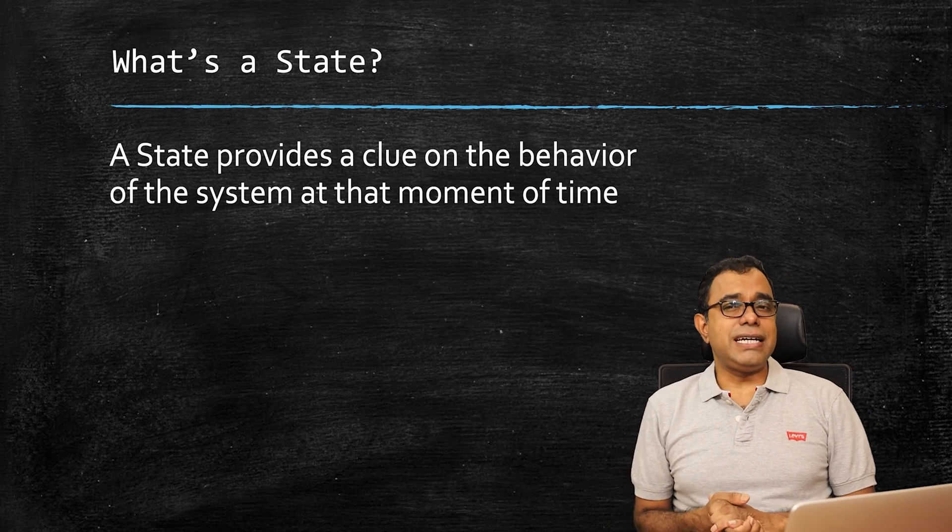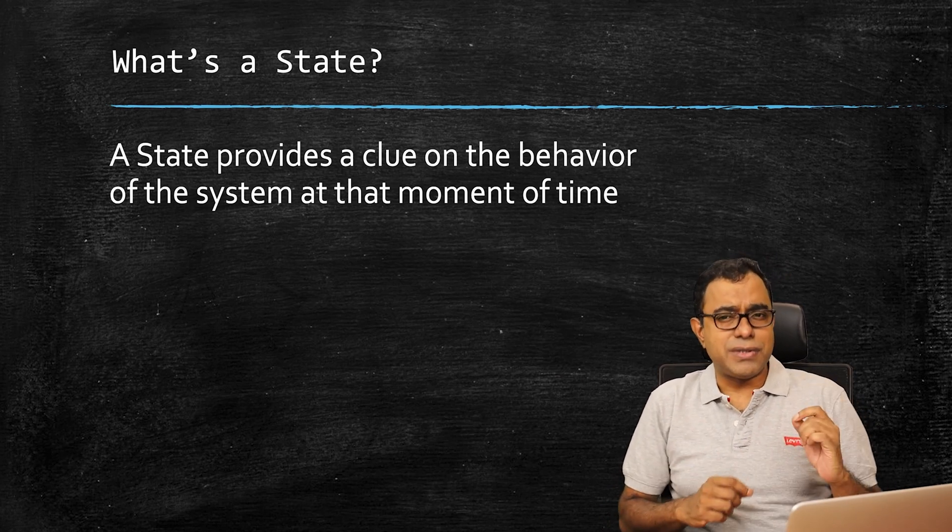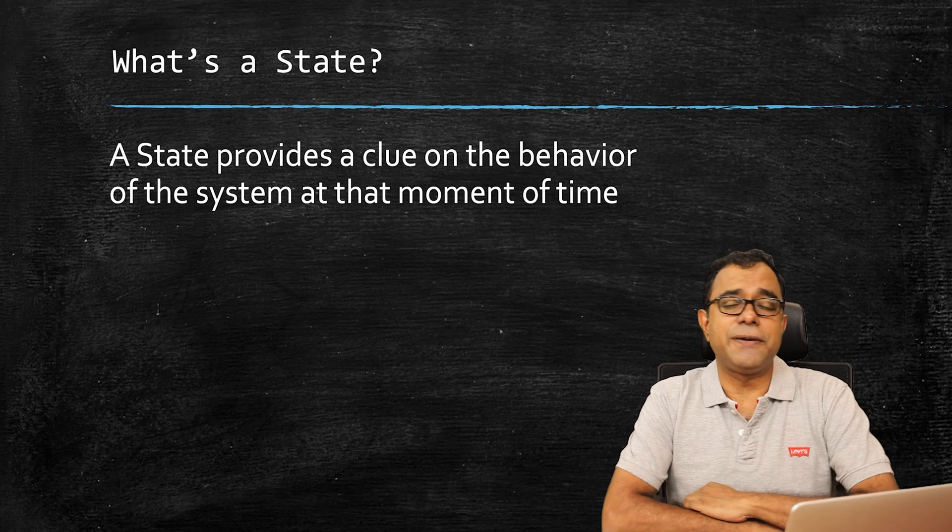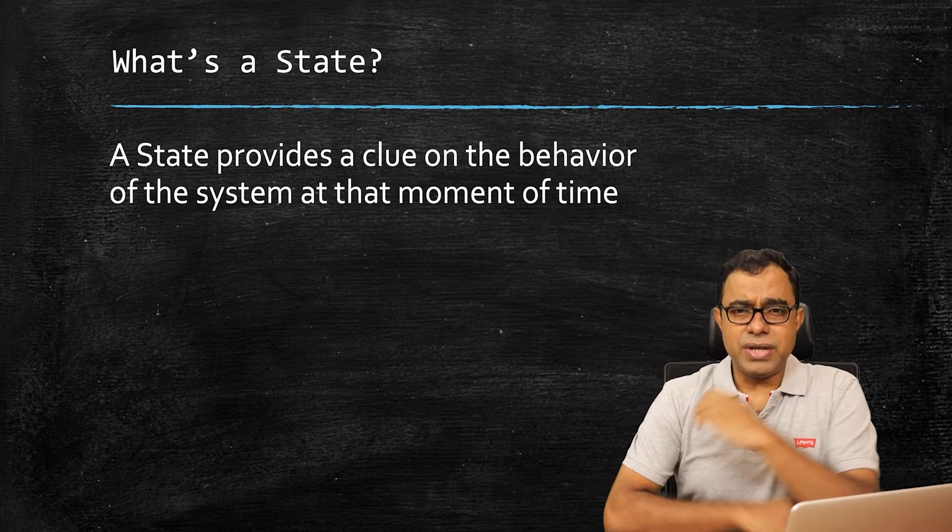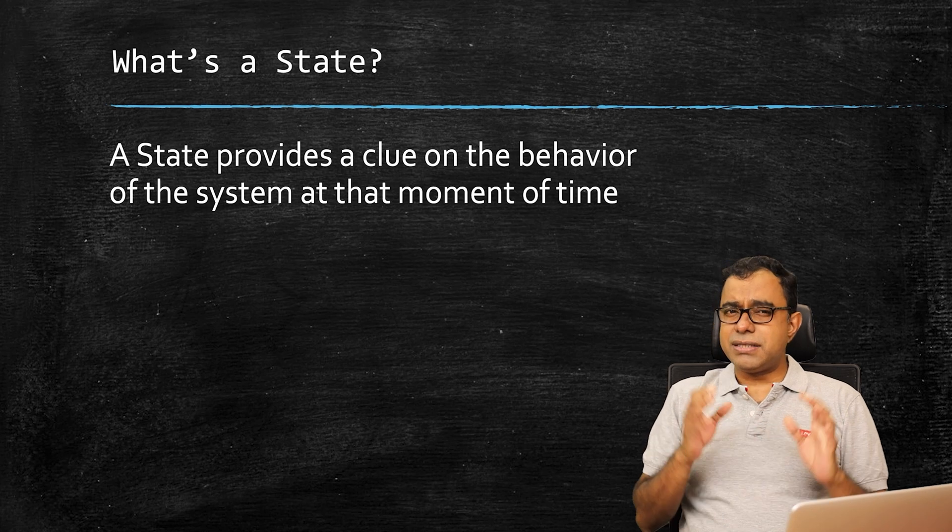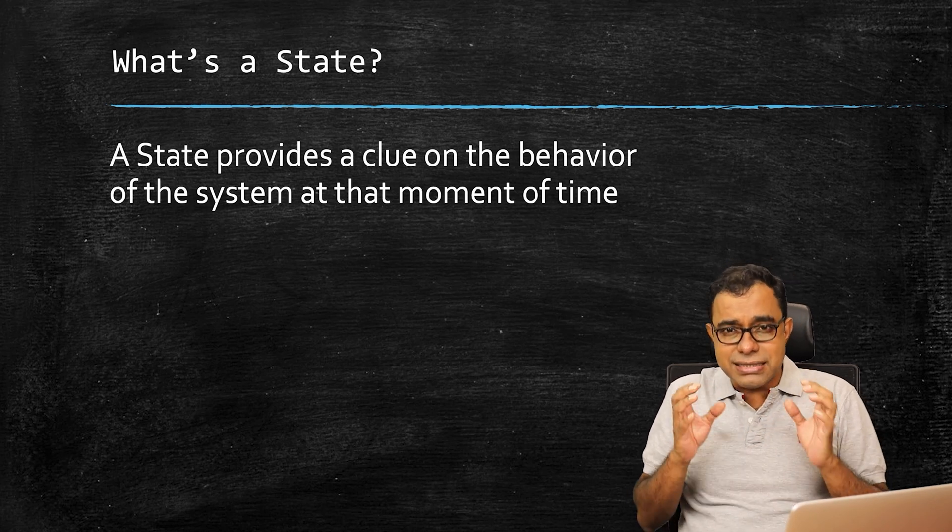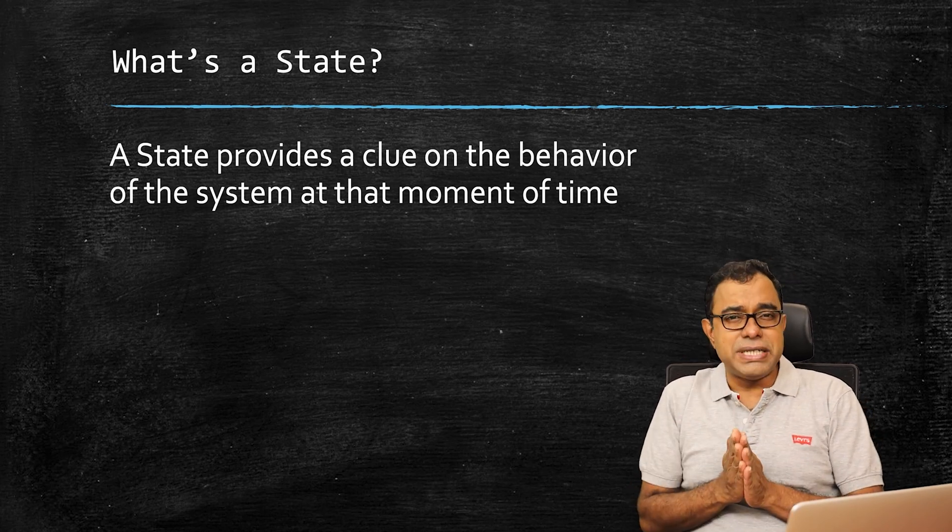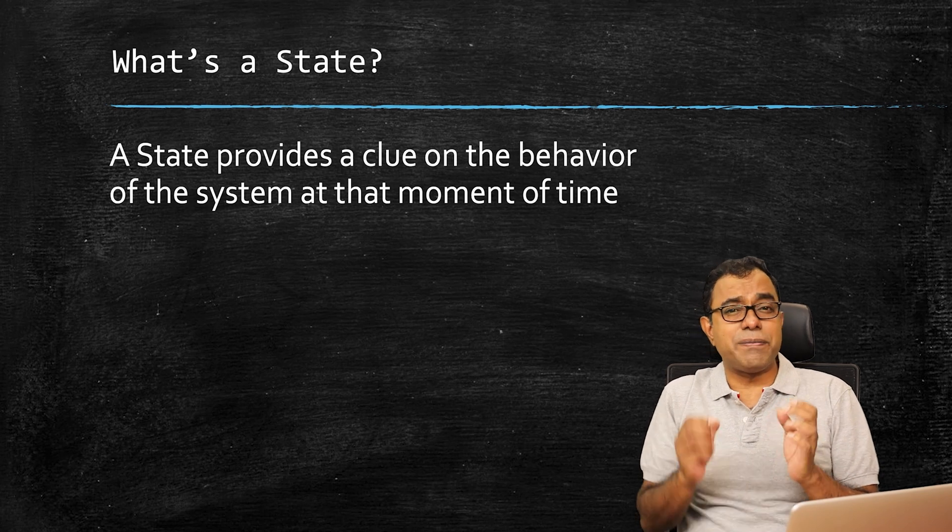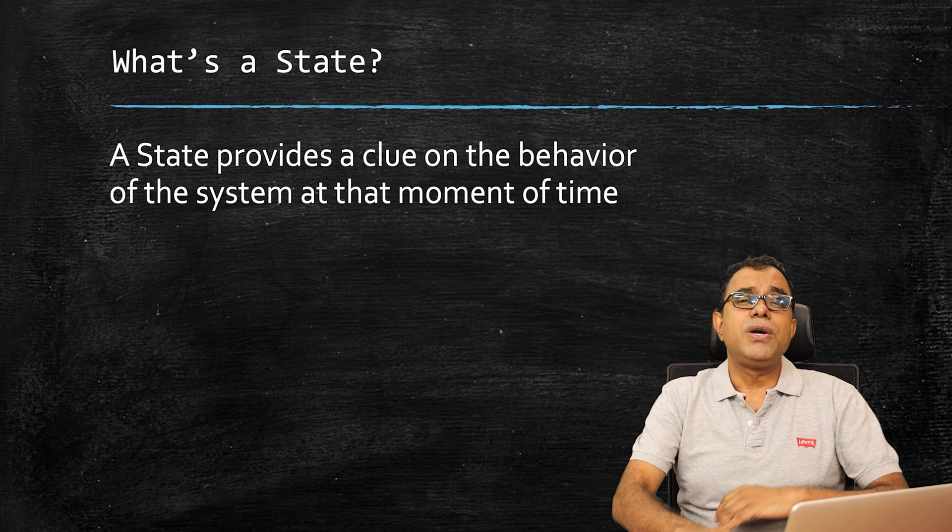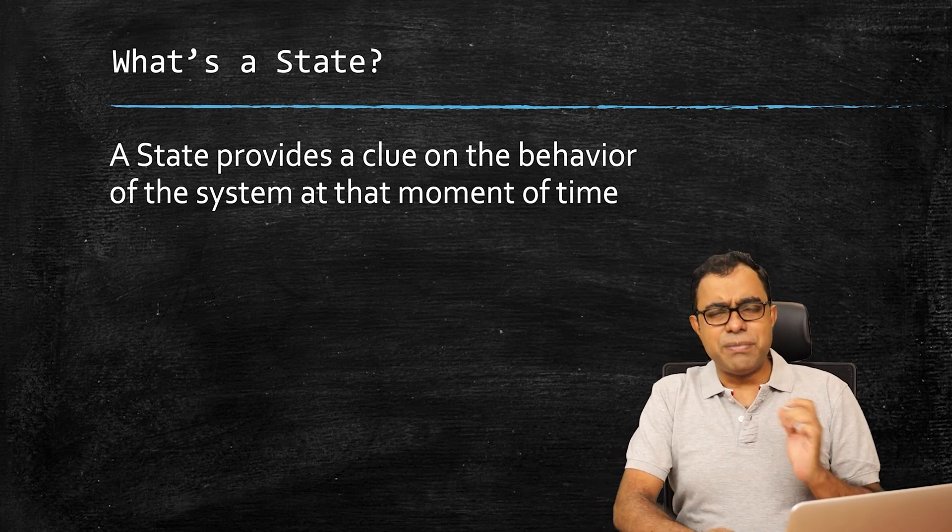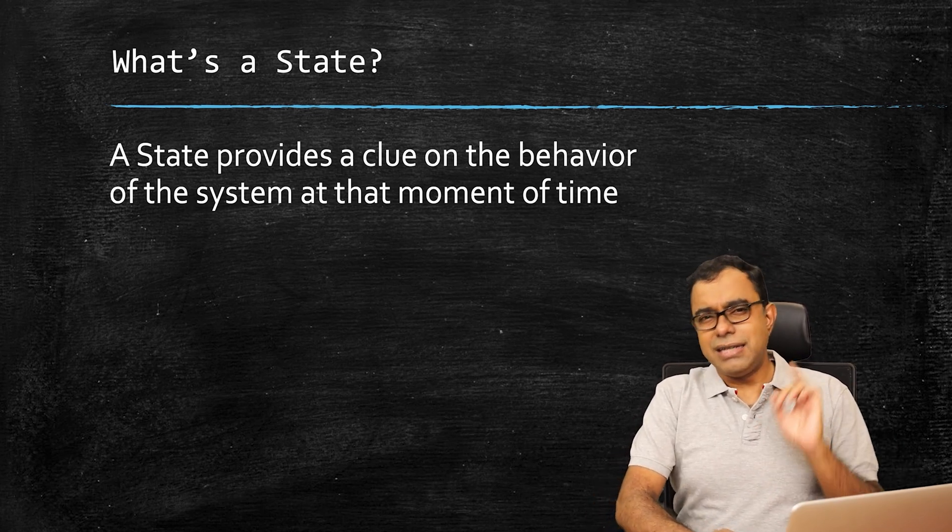Now when we talk about state machines, the very first thing that comes to our mind is what is a state. Because state seems to be the core of a state machine. So here is a not so technical definition of a state. A state is a set of information which gives you the clue about the behavior or characteristics of a system at that moment of time. I know it might sound confusing, but it is not.